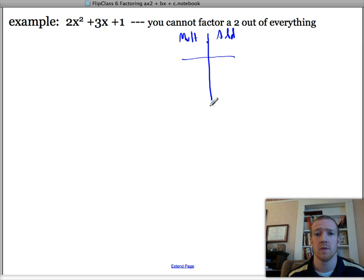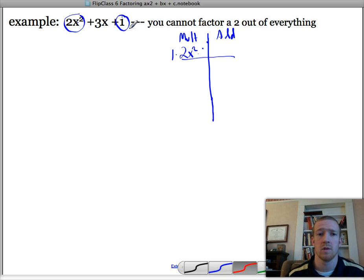But before, the table was really simple just because it was always a 1 here. Now it's a 2x squared. So they need to multiply to 2x squared, and they need to add. So I'm getting that 2x squared from this times this. So that times that, 2x squared times 1, or 1 times 2x squared is just 2x squared. And then they need to add up to this. So this is what they need to add to. They need to add to 3x.